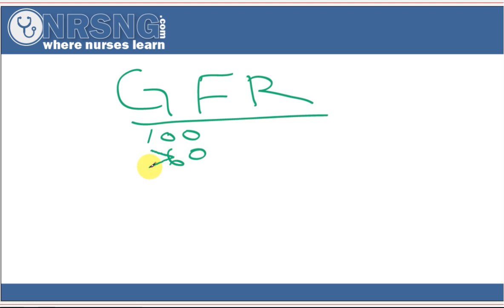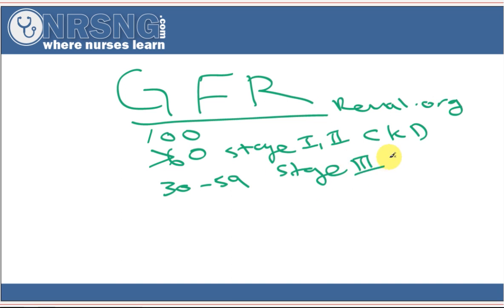We really want our patients to be greater than 60. Number around 60 would indicate stage 1 to stage 2 CKD, kidney disease. And that's according to renal.org. If we have a number between 30 to 59, that's going to indicate stage 3 kidney disease. And if our number is less than 30, that's going to indicate stage 4 to 5 kidney disease.